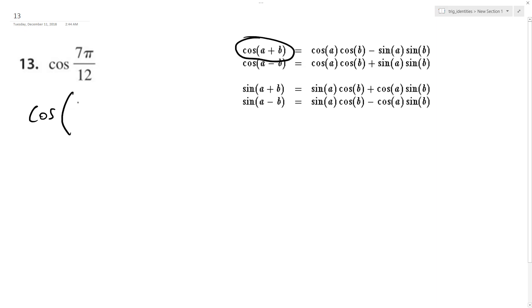So break this down to 3π over 12 plus 4π over 12, because both of these make 7π. So what we end up with is the cosine of π over 4 plus π over 3.